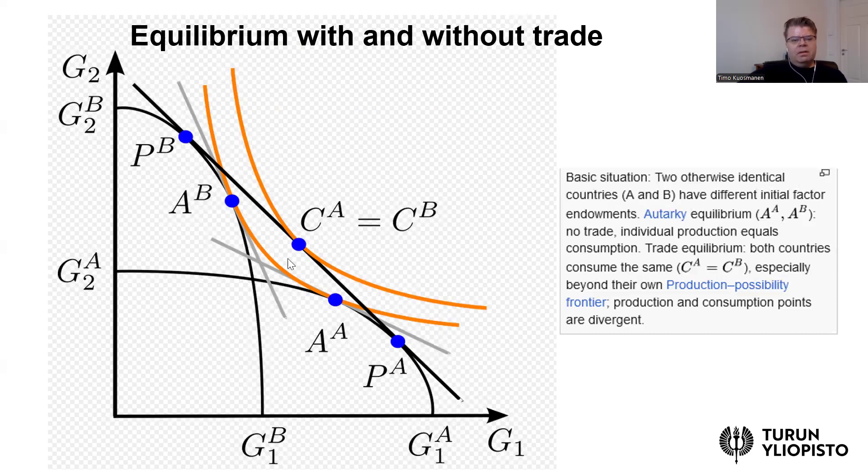I repeat that these orange indifference curves are the same for both countries because both countries have identical consumer preferences. And therefore the only difference is from these endowments of labor and capital. And the Heckscher-Ohlin theorem would predict that countries specialize more in the production of the good where they have larger endowments. So it's kind of analogous to Ricardo's theory of comparative advantage, but now the comparative advantage in this Heckscher-Ohlin model comes from factor endowments.